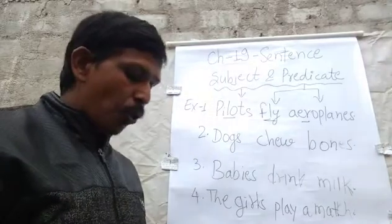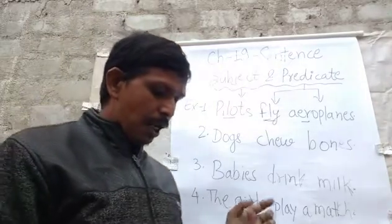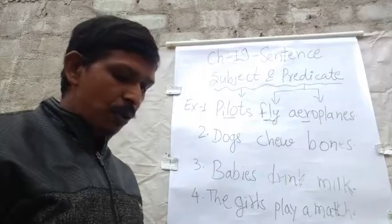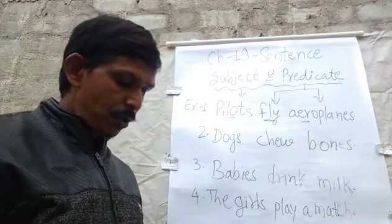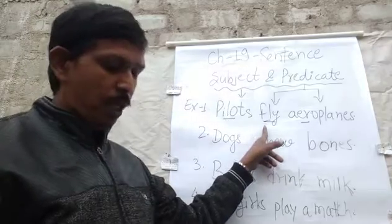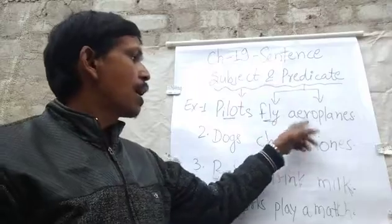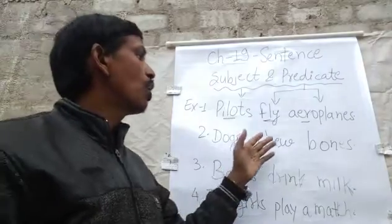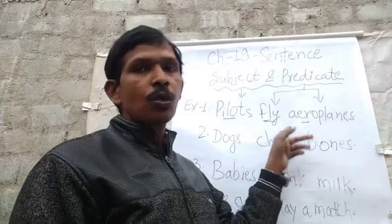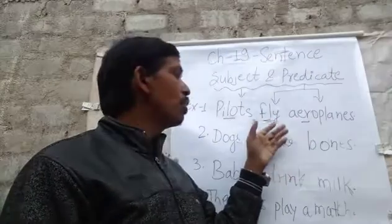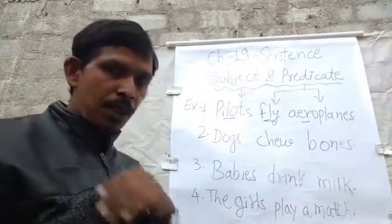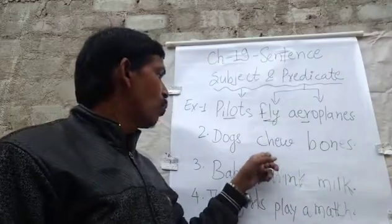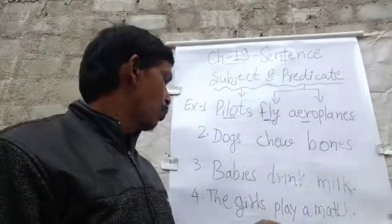Dear students, when we want to find the object of a sentence, we make a question using 'what' with the verb. For example: fly what? — aeroplanes. So the object is aeroplanes. Chew what? — bones. Drink what? — milk. Play what? — a match. In this way, by asking 'what + verb,' we can identify the object.